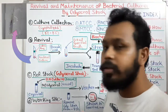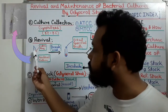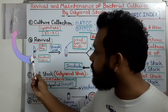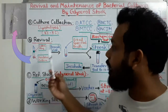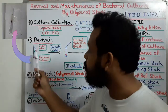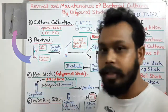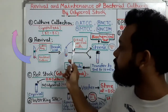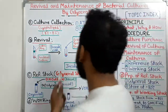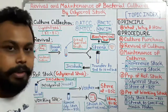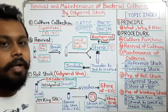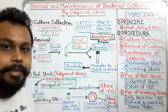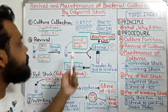The lyophilized cultures in powder form are present in the ampule with a cotton plug, and it is a sealed ampule. We have to break this ampule at the point of the cotton plug using a heavy weight, then remove the cotton plug. After that, we add approximately 0.4 to 0.5 ml of specified broth, which will be mentioned in the manual for reviving that particular bacterial culture.